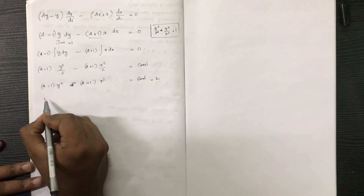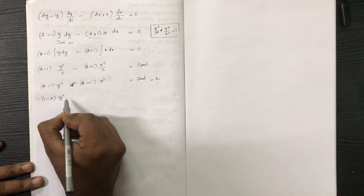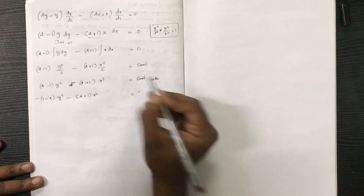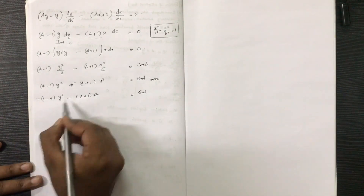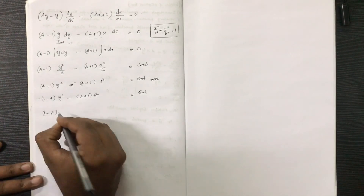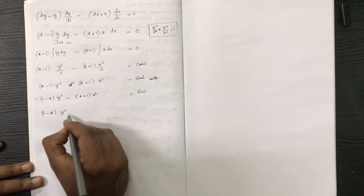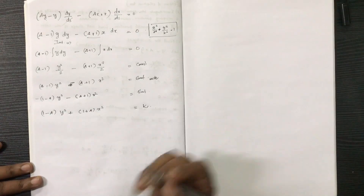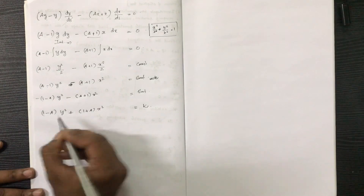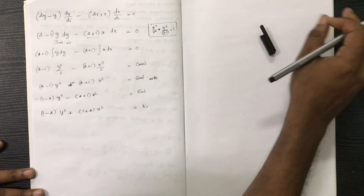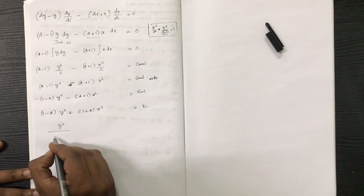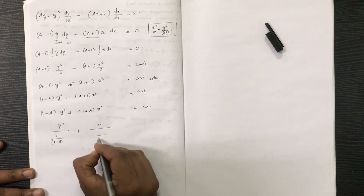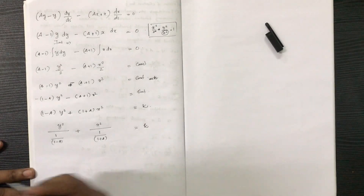Rearranging: (a−1) is negative, so we have y²·(a−1) − (a+1)·x² = constant. Rewriting as (1−a)·y² and (1+a)·x² terms, we get x²/(1/(1+a)) + y²/(1/(1−a)) = k, identifying a² = k/(1+a) and b² = k/(1−a).